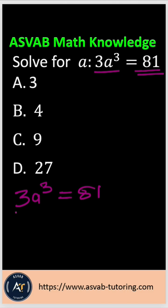First, what you have to do is divide both sides by 3. Let's do that. 3 and 3 cancel out, so that gives you a³ = 81/3. Let's divide.